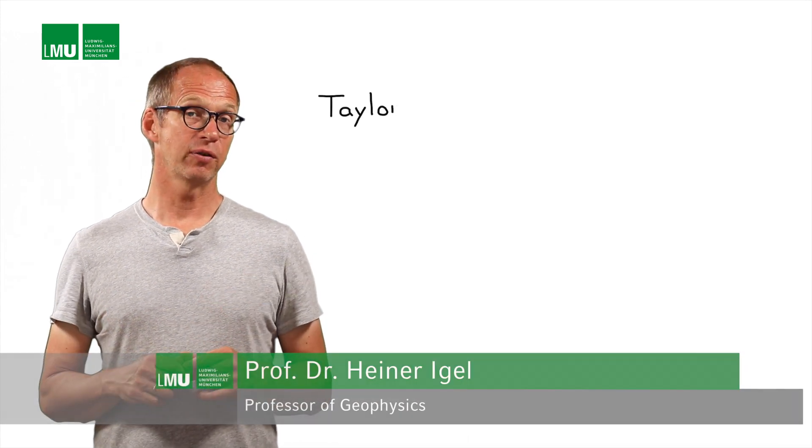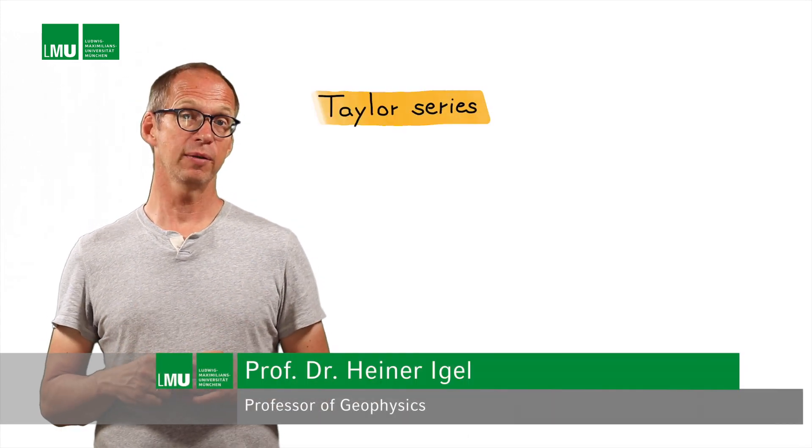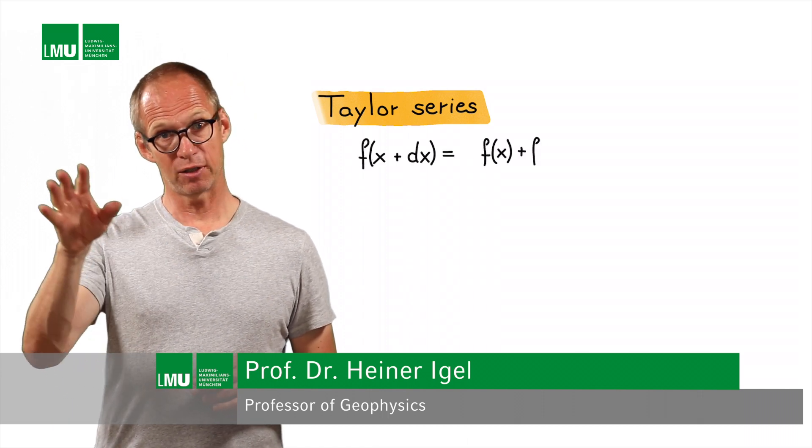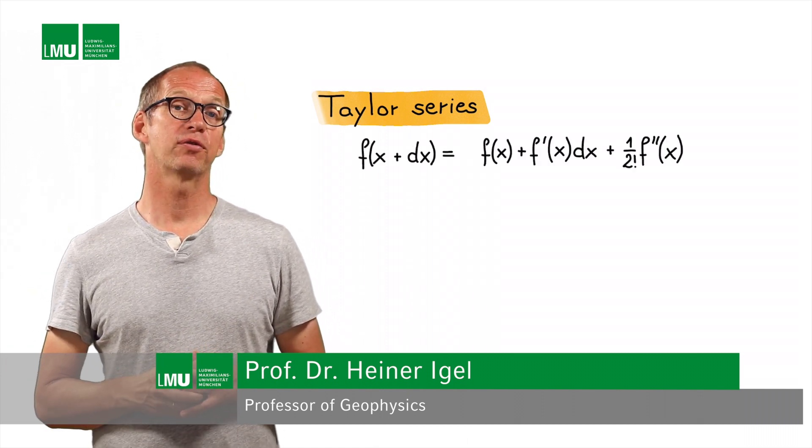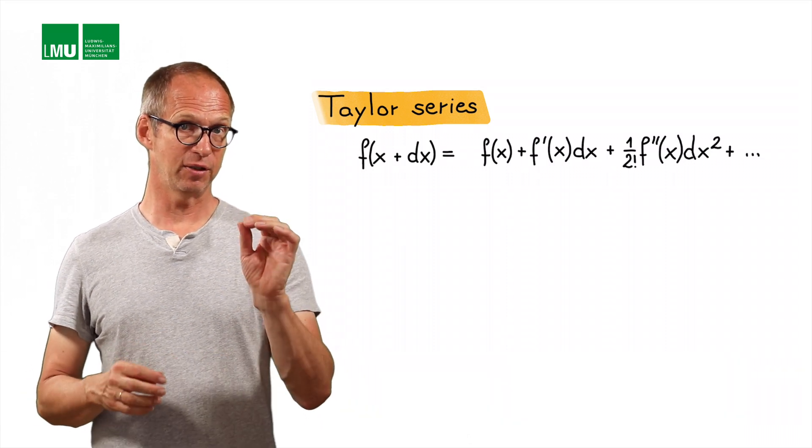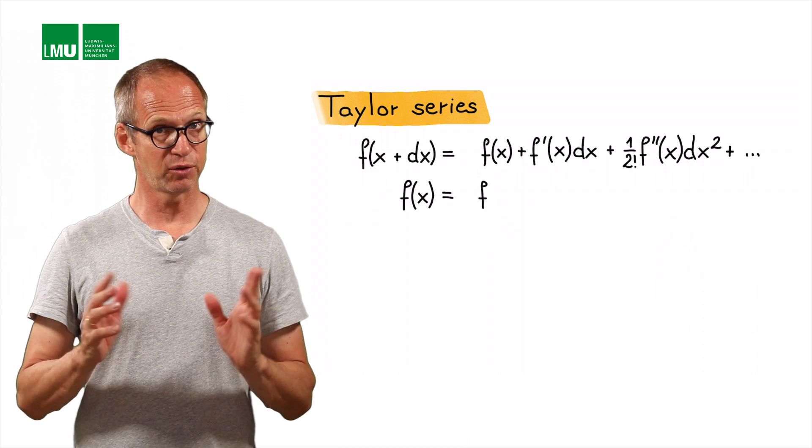So let's simply write down the Taylor series for these three points here. So f of x plus dx is equal to f of x plus all the terms that follow. We actually also write down simply the term f of x equals f of x. You will see later why.